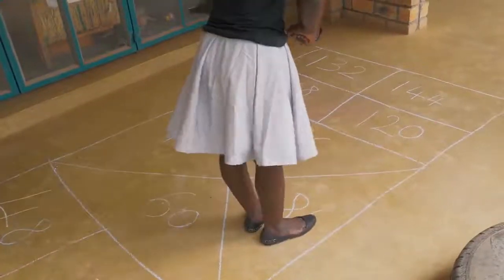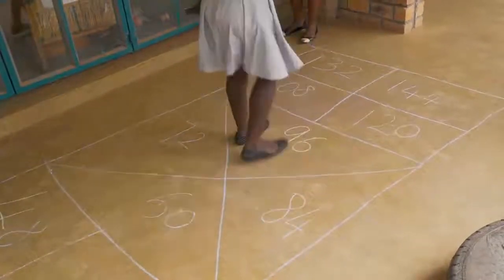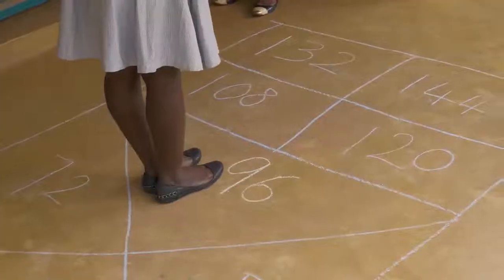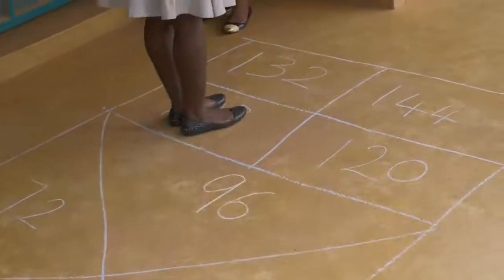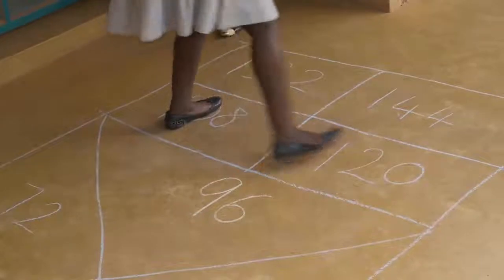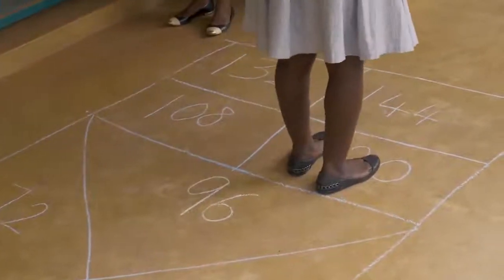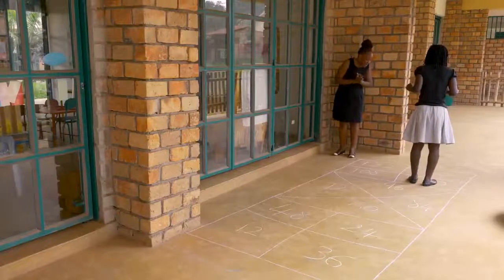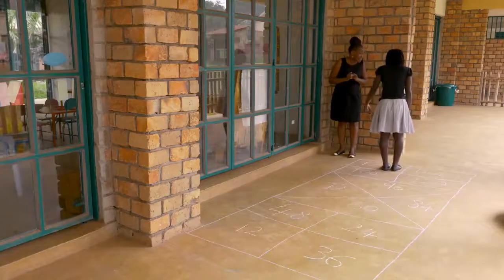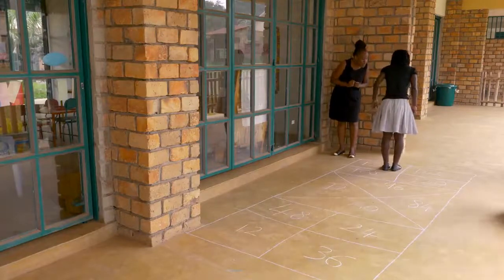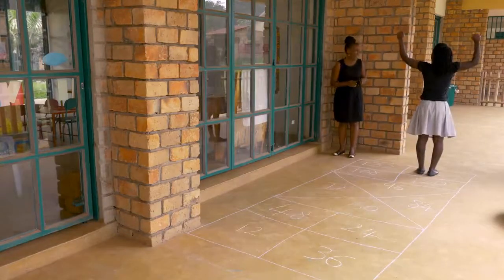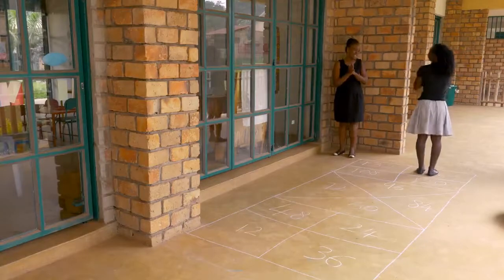12 times 7 is 84. 12 times 8 is 96. 12 times 9 is 108. 12 times 10 is 120. 12 times 11 is 132.